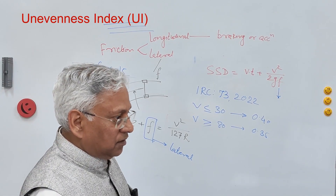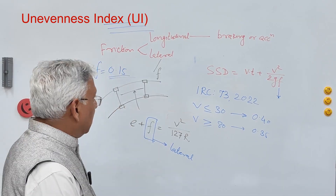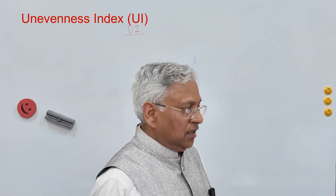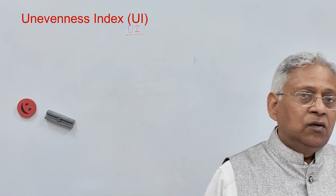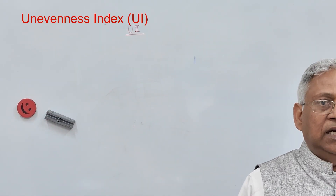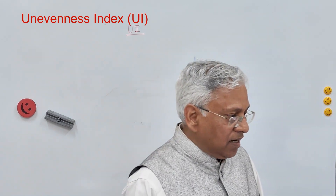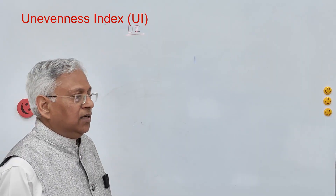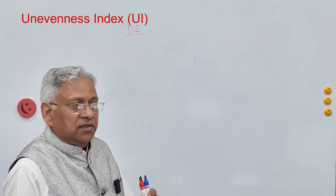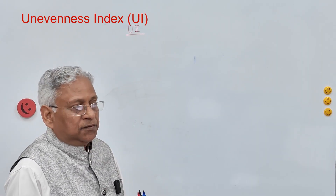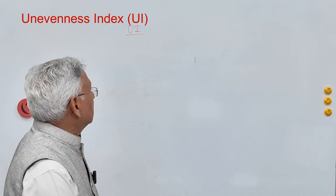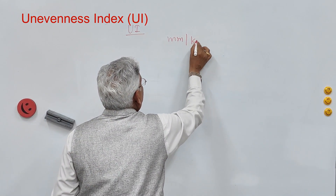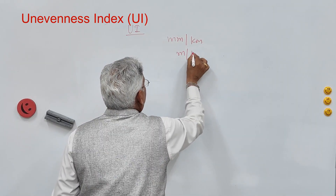The third important surface characteristic is unevenness index or road roughness — the presence of undulations on the road. Road roughness or unevenness index is defined as cumulative undulations per kilometer length of the road, and is expressed as millimeter per kilometer or meter per kilometer.